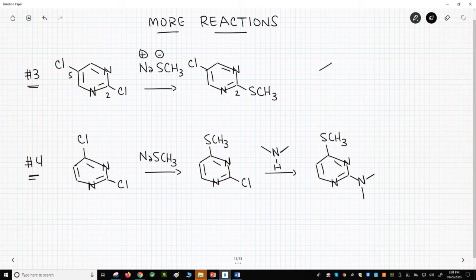Attacking at the 5-position is less favorable because this places the negative charge away from nitrogen. If we draw different resonance forms of this structure, we will not be able to put the negative charge on the nitrogen. So the 5-position chlorine is less reactive than the 2-position chlorine.